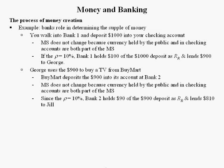Since the reserve requirement ratio was set at 10%, Bank 2 can't lend out $90 of that $900 deposit. What's left? $810.